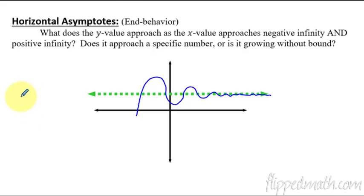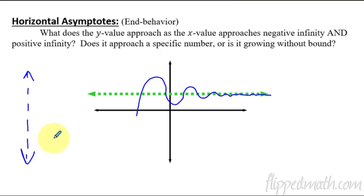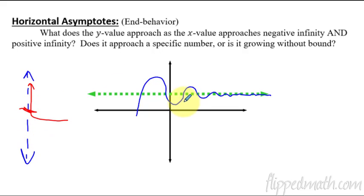As opposed to a vertical asymptote — if we had a straight up-and-down line, a graph can't cross that. If you were to draw a graph, once it goes towards that line, it would either be pushed up or pushed down and it can't cross it. Horizontal asymptotes, they can cross.